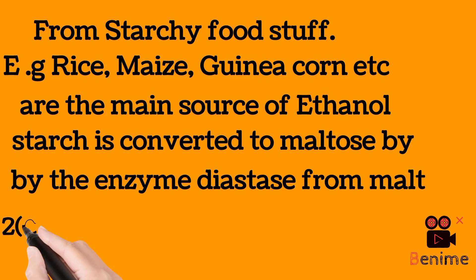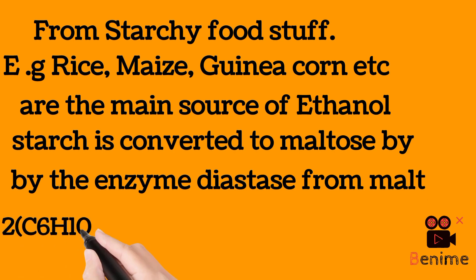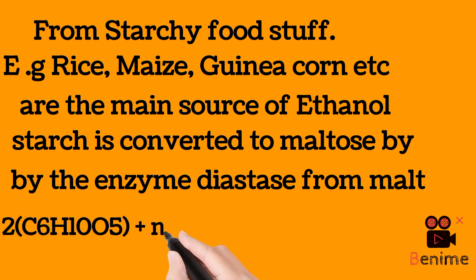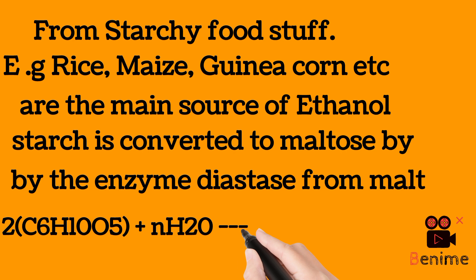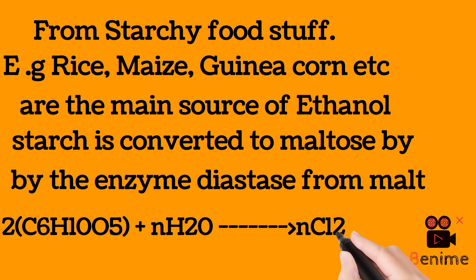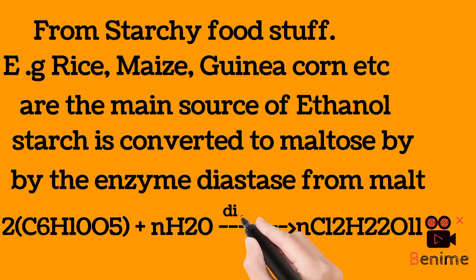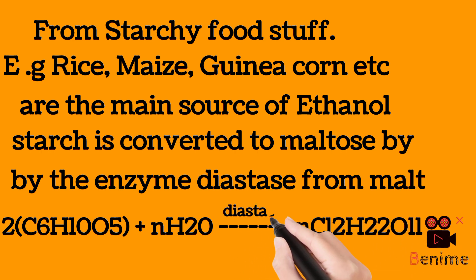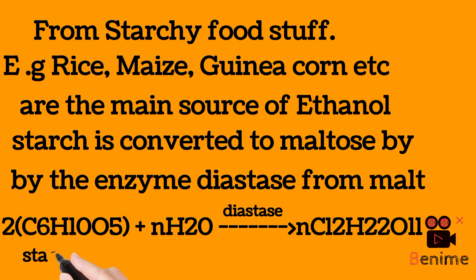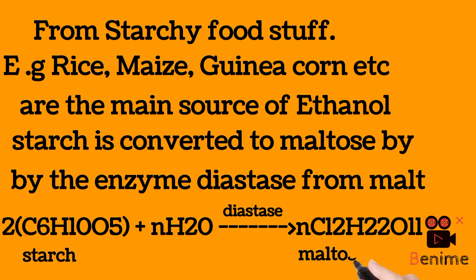We have the equation. Starch, which is (C6H10O5)n, in combination with water will give you maltose via the action of diastase. So that is how maltose is produced.